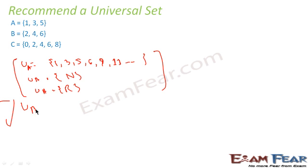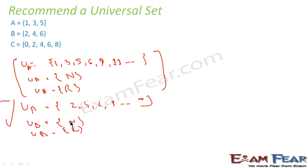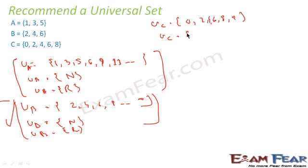Similarly, for set B = {2, 4, 6, …}, the universal set can be all even numbers, or all natural numbers, or all real numbers — since these are all larger sets containing B. For set C = {2, 4, 6, 8}, the universal set can be {0, 2, 4, 6, 8, 9, 10, 11, …} or similarly all natural numbers or all real numbers. The universal set is simply a bigger set that must contain at least all the elements of the given problem.